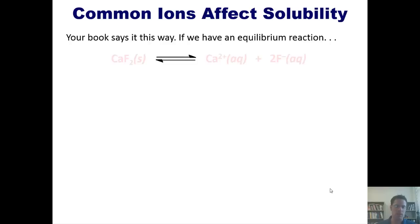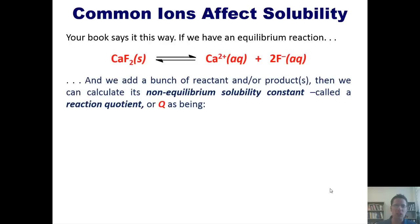Our text says it in this way. If we have an equilibrium such as this one, and we add a bunch of reactant and/or products, then we can calculate its non-equilibrium solubility constant called a reaction quotient or Q as being this.